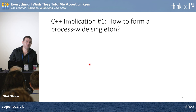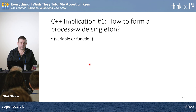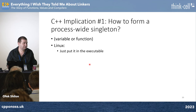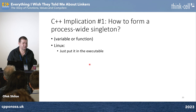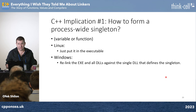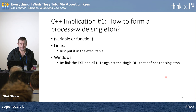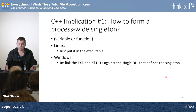So, what do we know so far about Linux? Symbol and library dependencies are listed separately. By default, all calls are indirected through the GOT. By default, resolution in libraries is deferred to load time, and the executable is searched first. This collection of facts has far-reaching implications for developers. Here's one: how can we form a process-wide singleton? In Linux, you just put it in the executable — wherever you use it, the singleton's implementation is picked up from there, since the executable is searched first.